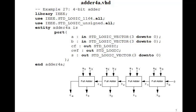So let's write a 4-bit adder VHDL program. Here's the entity: input A, standard logic vector 3 downto 0, input B 3 downto 0. The outputs will be the carry flag CF, the overflow flag OVF, and the output sum S 3 downto 0.